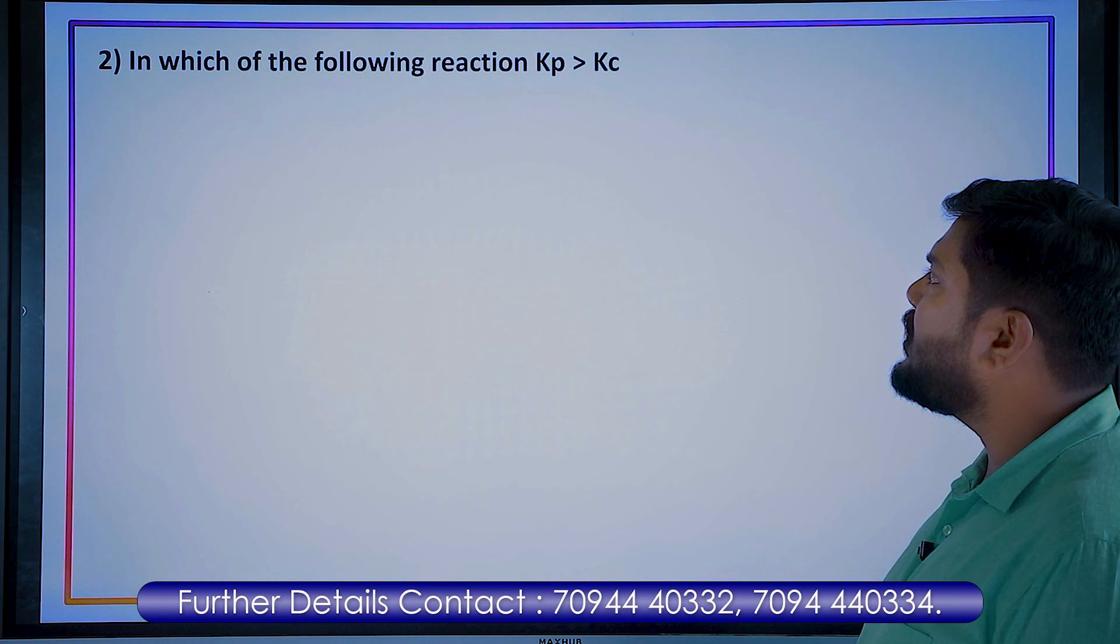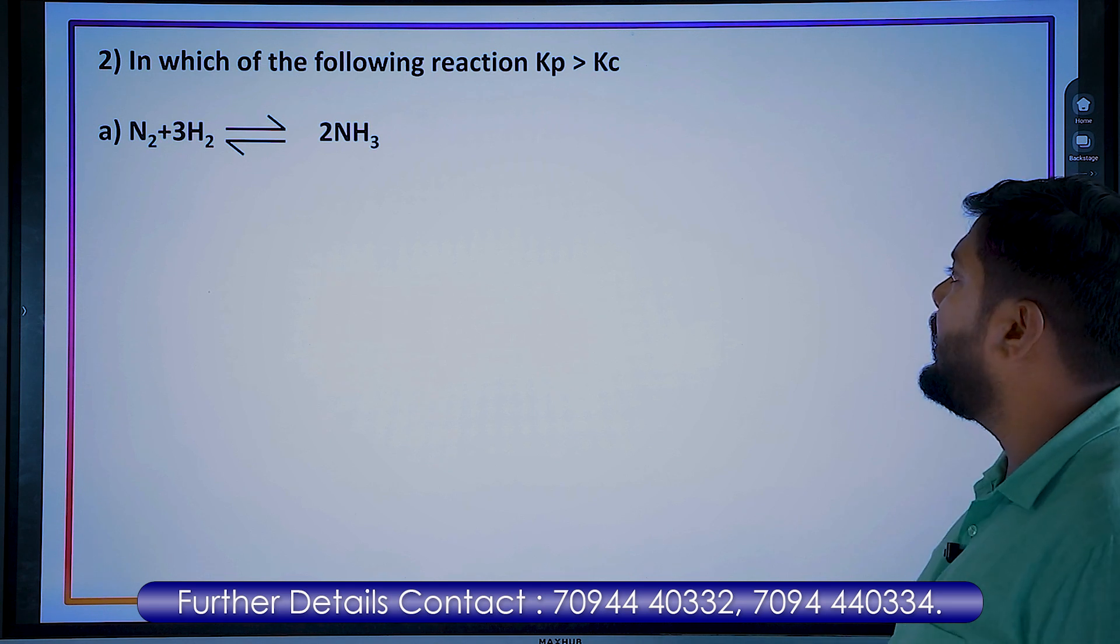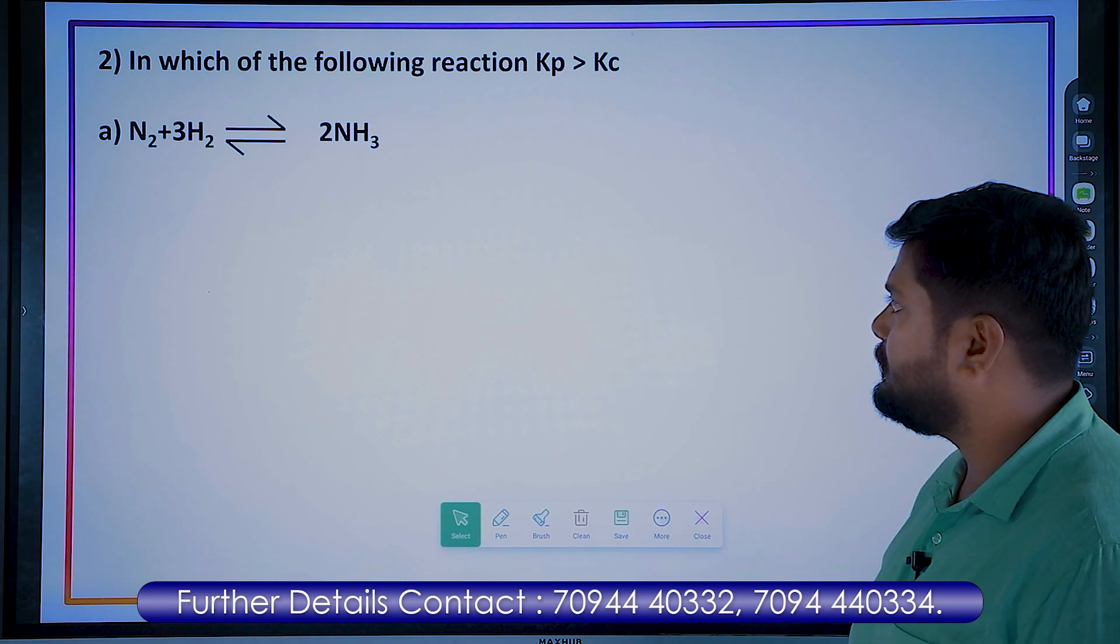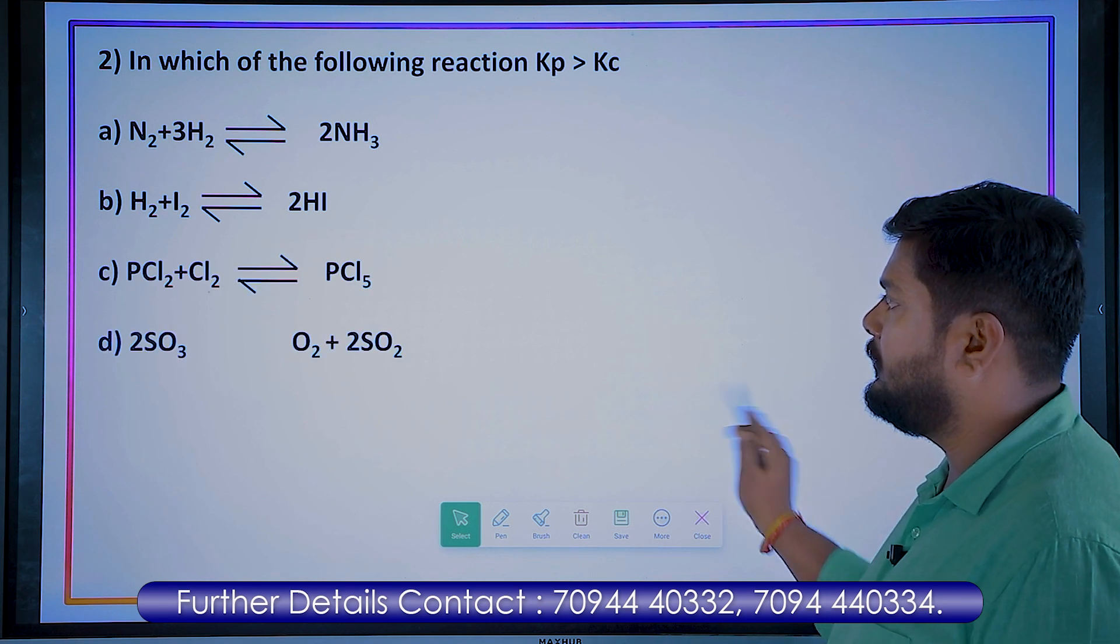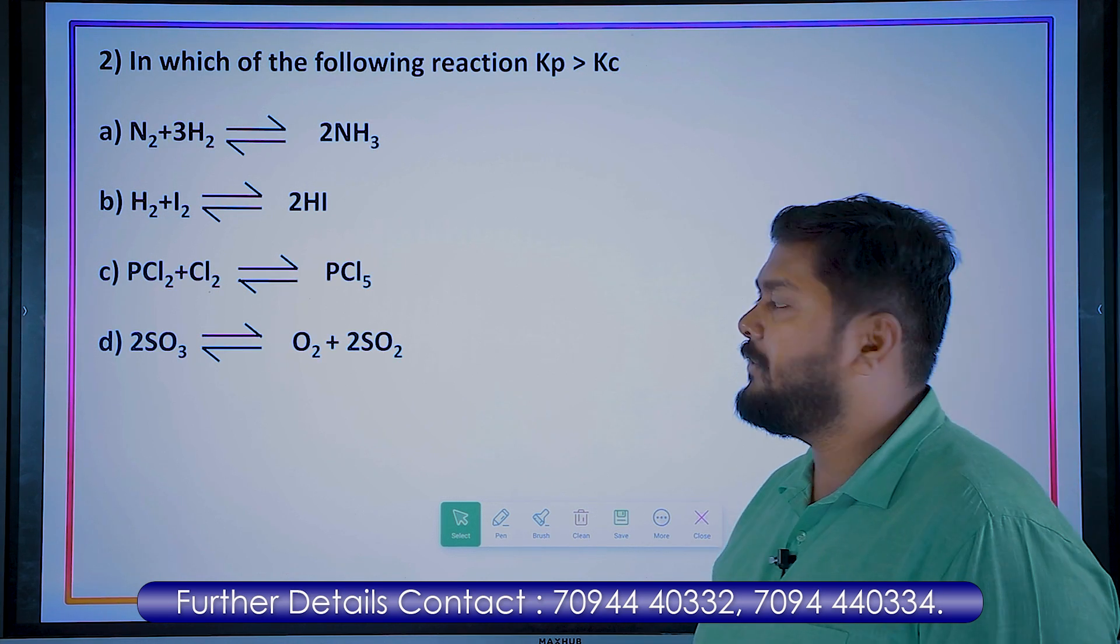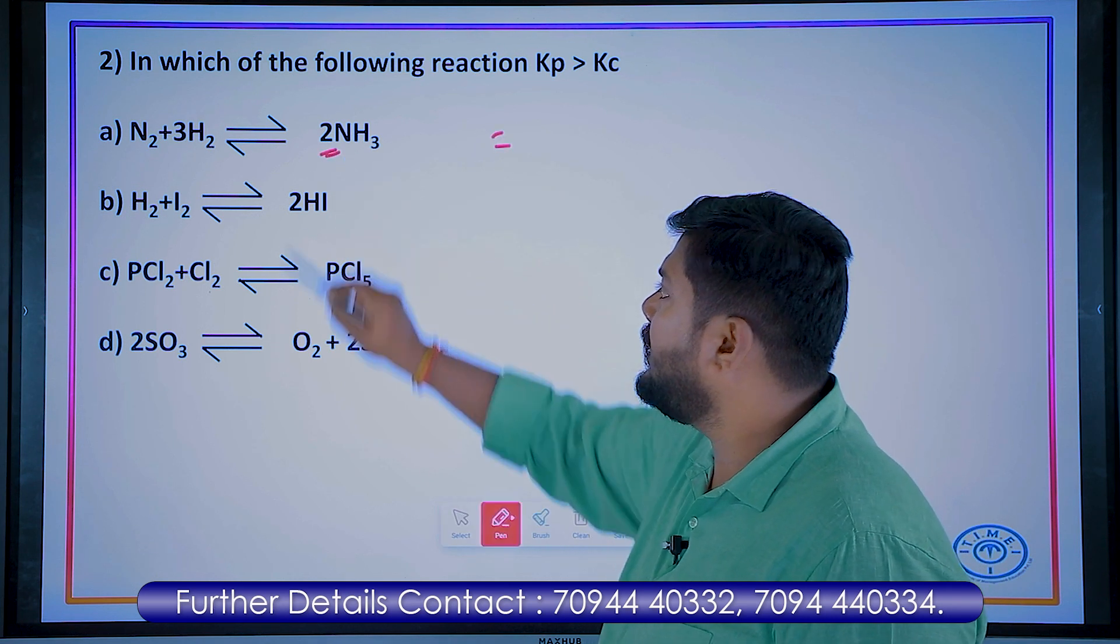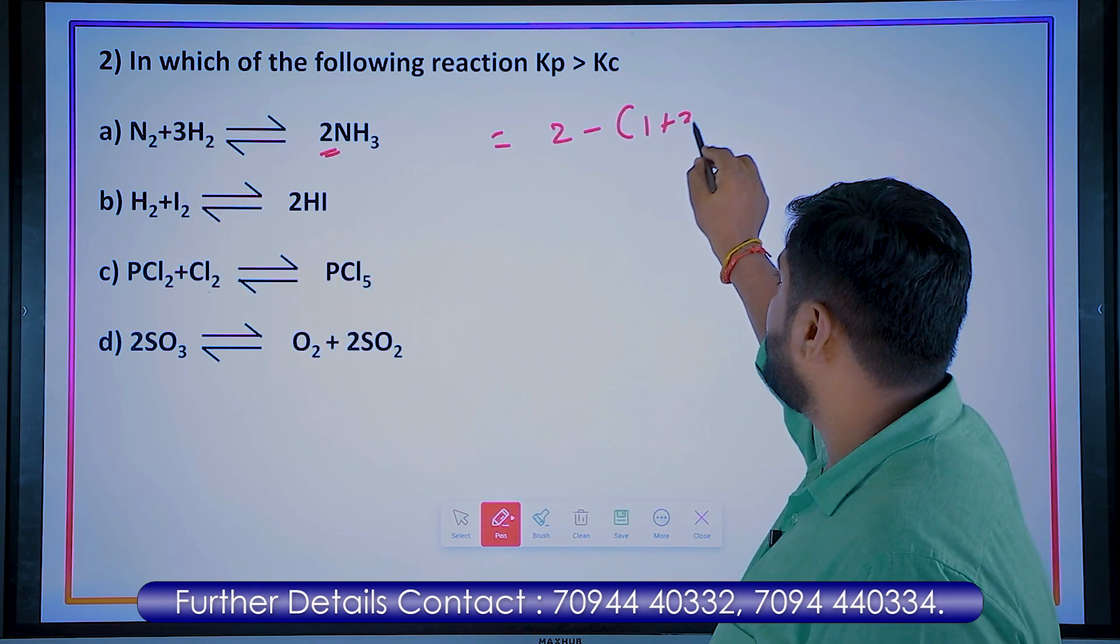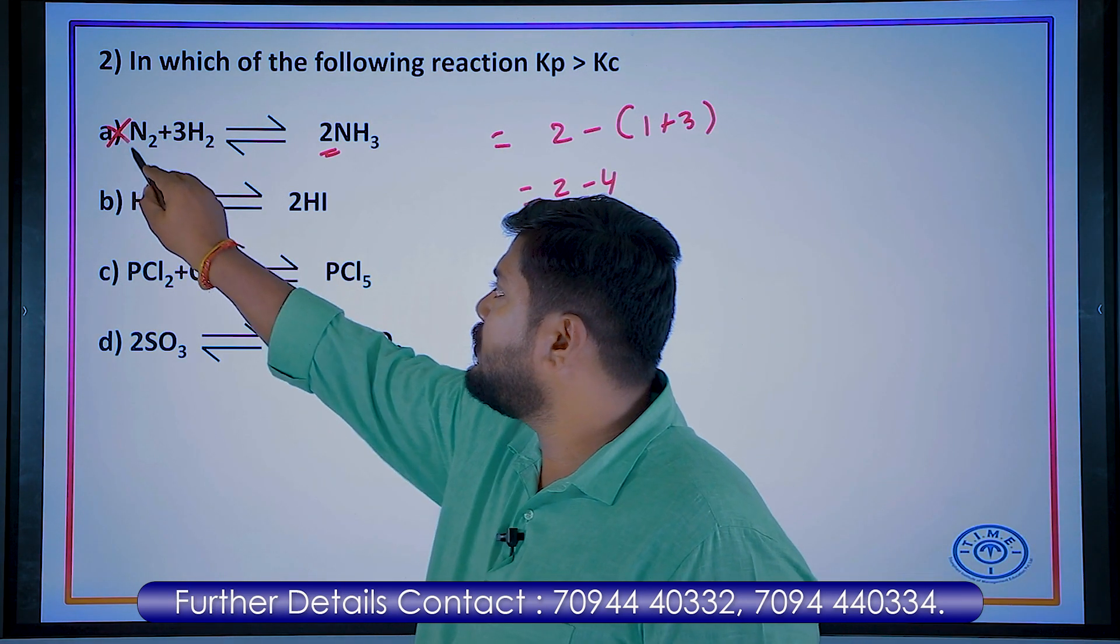Next, in which of the following reaction Kp will be more than Kc? Kp greater means delta n value should be positive. First reaction: product has 2 moles of ammonia, reactant has 1 plus 3, that's 4 moles. So 2 minus 4 means delta n is negative. So you will not get this option.